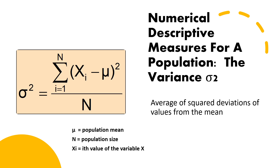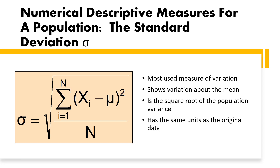For population numerical descriptive measures, we use sigma squared (σ²) as the symbol for population variance. The formula is the same as for sample variance — the average of squared deviations of values from the mean — but the symbol changes. For population standard deviation, the symbol is sigma (σ), and you use the same calculation method discussed earlier.